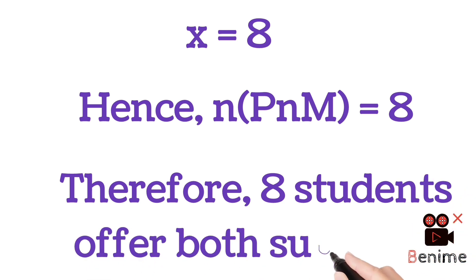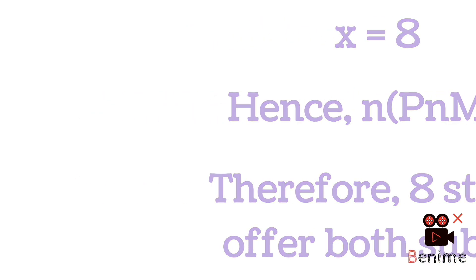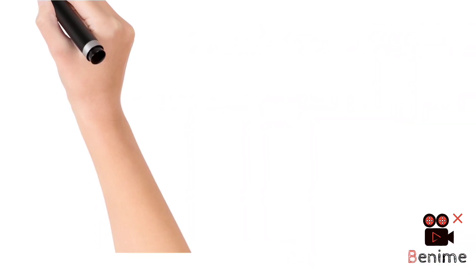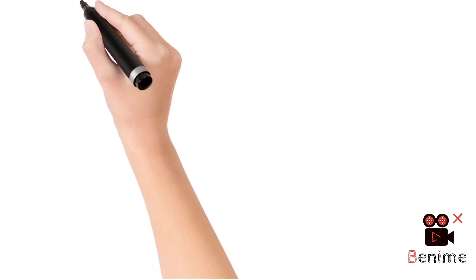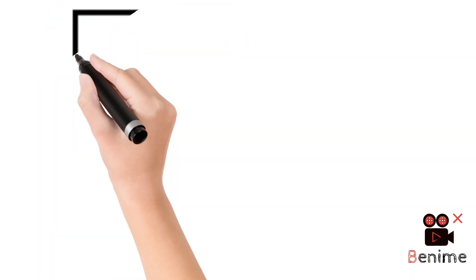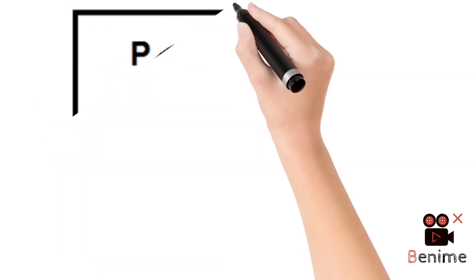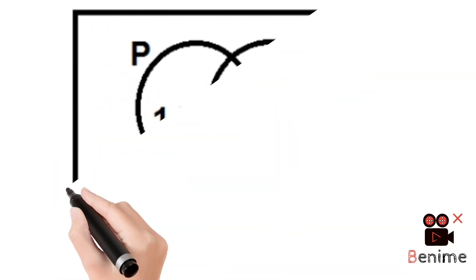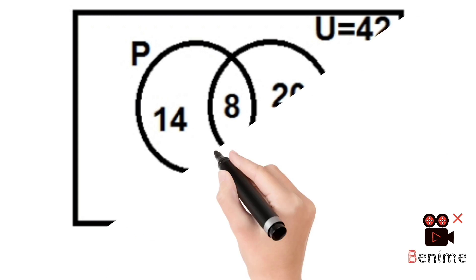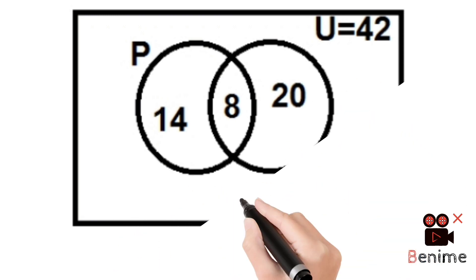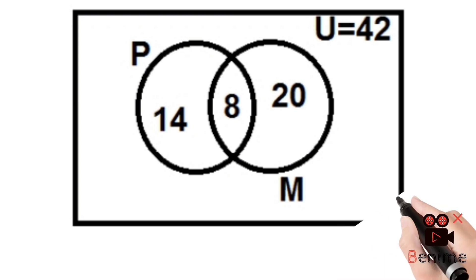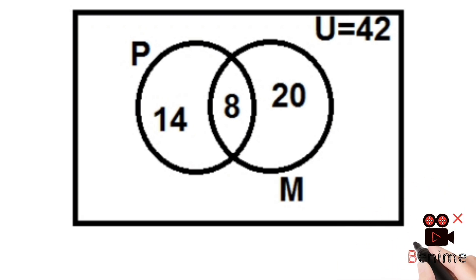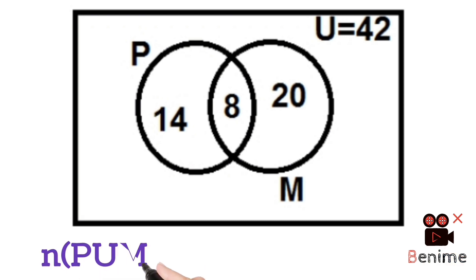This is the Venn diagram that shows the information given in the question. We have two circles here again, one for Music and one for Physics. On the intersection, we have 8. On the circle for Physics, we have 14 and 8 — the sum gives 22 — while on the one for Music, we have 8 and 20 — the sum gives 28.